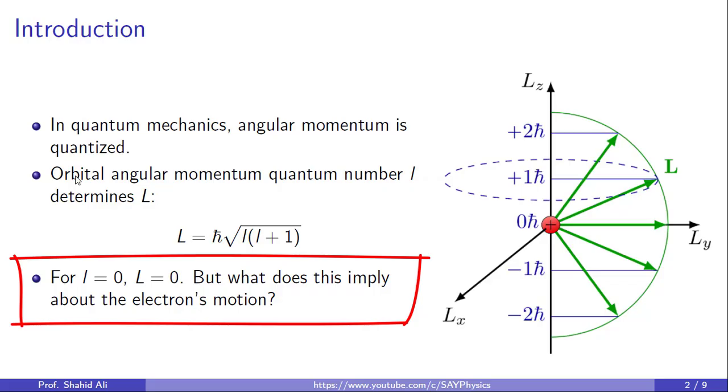Now, what happens when small l equals 0? Plugging it into the formula, we see that capital L is equal to 0. But here is the important question. Does this mean the electron is not moving at all? Is it completely stationary? That is the puzzle we are going to unpick in the coming slides.